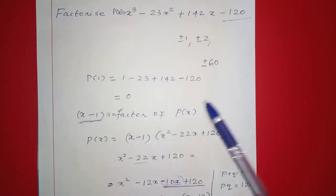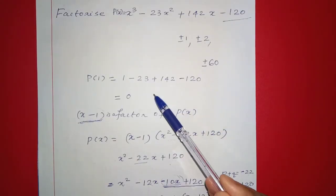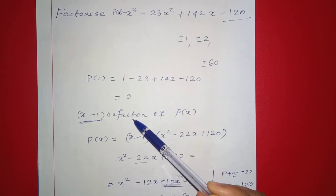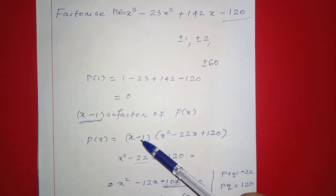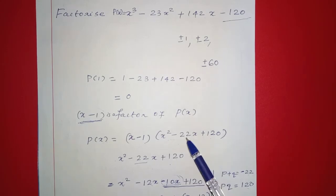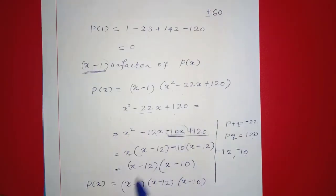So when factoring a cubic polynomial, we use the trial method to find one factor. We then divide the polynomial by that factor to get a quadratic polynomial, and apply the middle term splitting method to fully factor it.